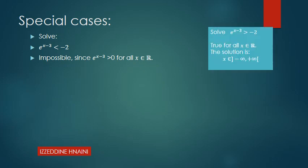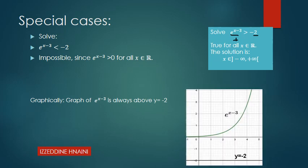Now if we solve e^(x-3) > -2, this inequality is always true because the exponential is always positive, and a positive number is always greater than a negative number. So the solution is all of ℝ, from minus infinity to plus infinity. Graphically, the graph of e^(x-3) is always above y = -2, confirming that e^(x-3) < -2 is impossible.